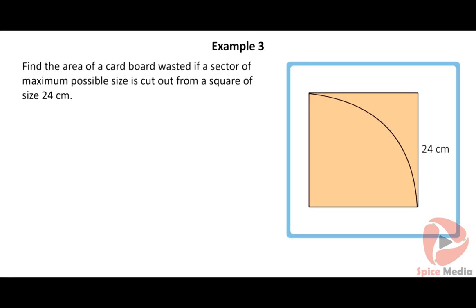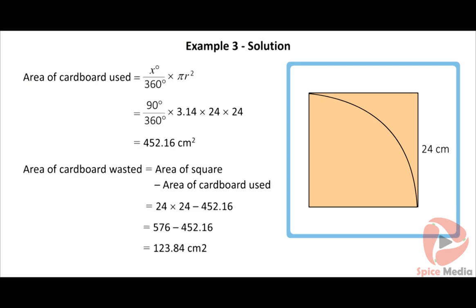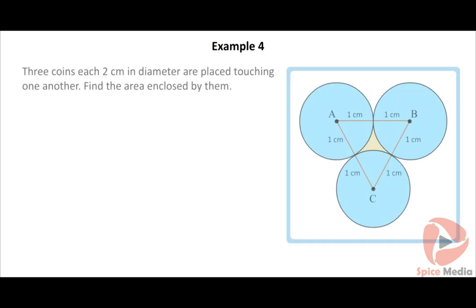Here is the next example: find the area of cardboard wasted if a sector of maximum possible size is cut out from a square of size 24 centimeters. Click on the solution button to view the answer. Next example: three coins each 2 centimeters in diameter are placed touching one another. Find the area enclosed by them. Click on the solution button to view the answer.